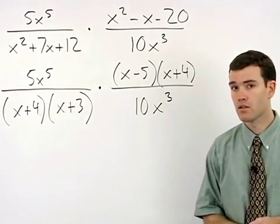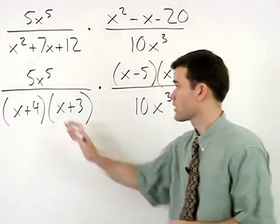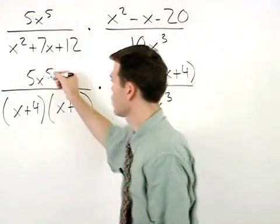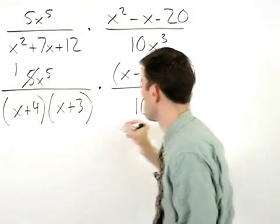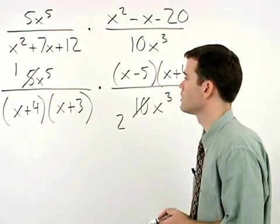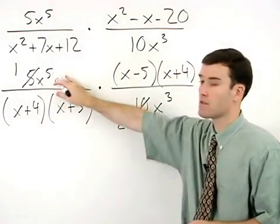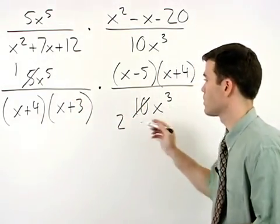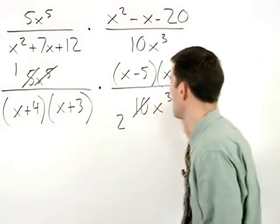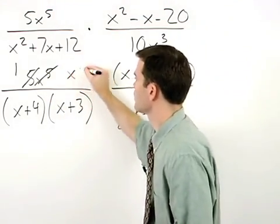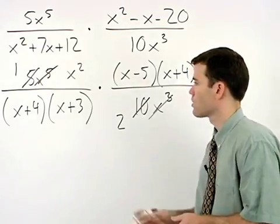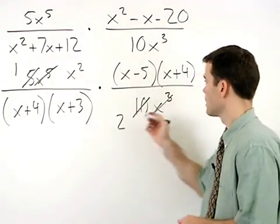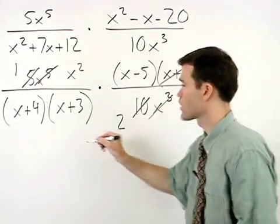Now we can cancel. Cross canceling the 5 and 10, we have 1 and 2. And remember, x to the fifth over x to the third is x to the 5 minus 3, or x squared. And cross canceling the other way, notice that the x plus 4's cancel.